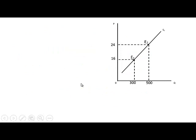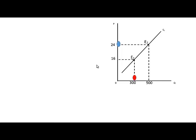Here we have a supply curve showing quantity supplied at a price of 16 rand and a price of 24 rand. If the price increases from 16 to 24, the quantity supplied increases from 300 to 500. The formula for calculating price elasticity of supply is percentage change in quantity supplied divided by percentage change in price.